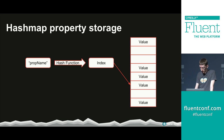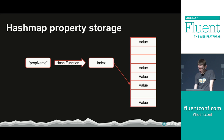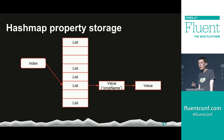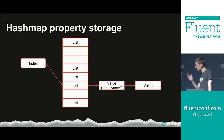There's some hidden complexity: what happens if two different property names produce the same index from the hashing function? You obviously can't store two different values in the same array location. One way to deal with this is to create linked lists for each location in the array — so if two properties map to the same index, you can iterate through the list to find the actual property you care about.